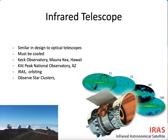Infrared telescopes are sometimes put on Earth — there's a famous pair in Hawaii. The problem is that the Earth, the telescope, and everything around it emits quite a bit of infrared noise, so the telescope needs to be supercooled. The atmosphere itself has a temperature and blurs the infrared signals coming through from space, though there are corrective optics for that. Keep in mind that the infrared region covers a larger frequency range than all the colors we can see with our eyes combined.